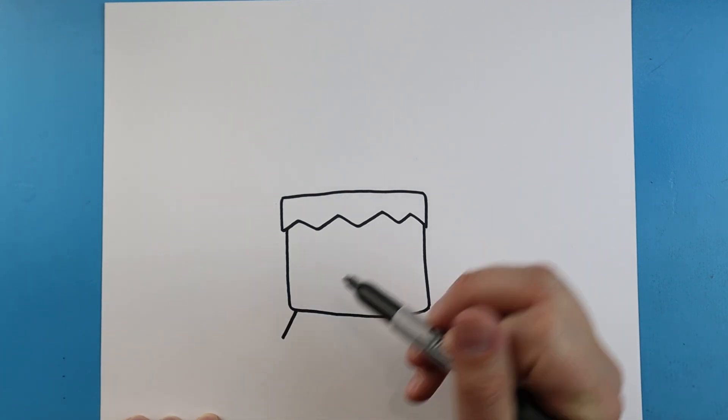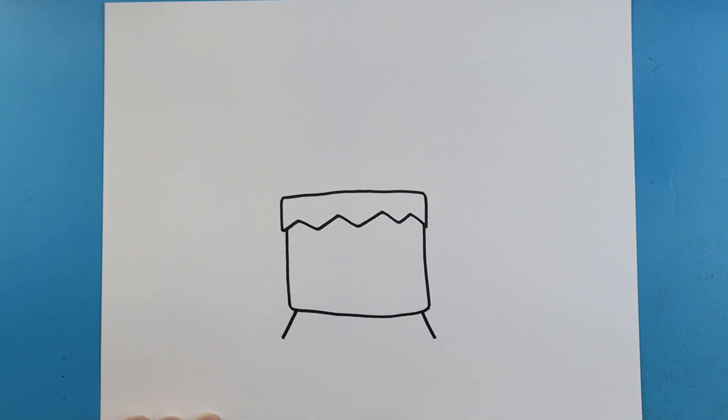Starting here at the bottom, let's make two diagonal lines. Then let's draw a line that comes across.